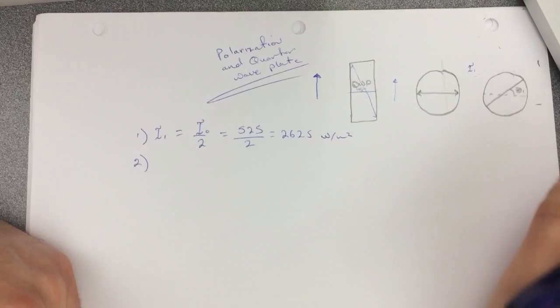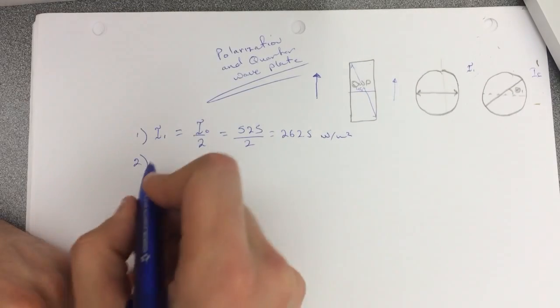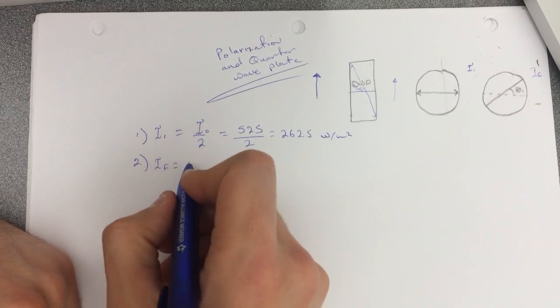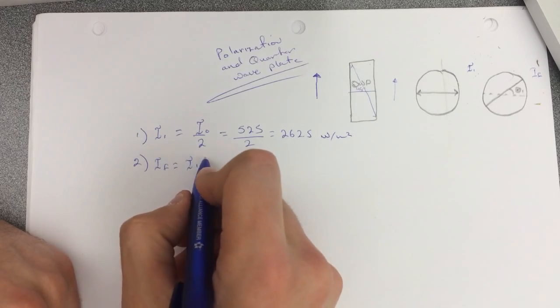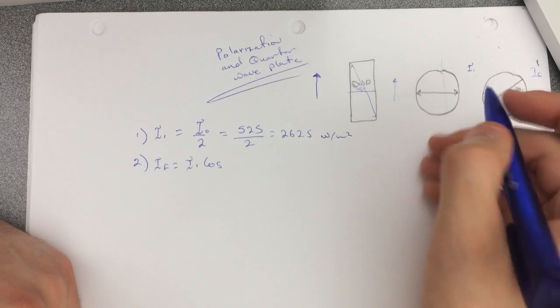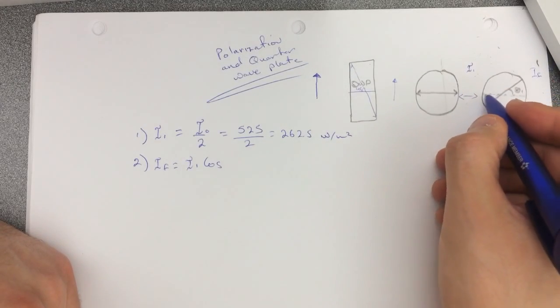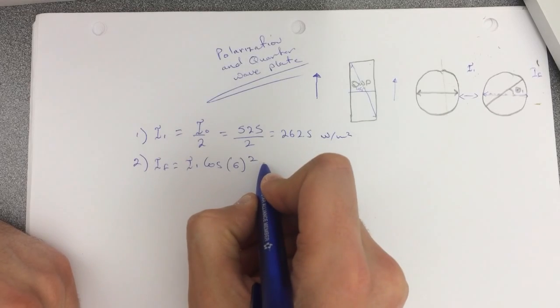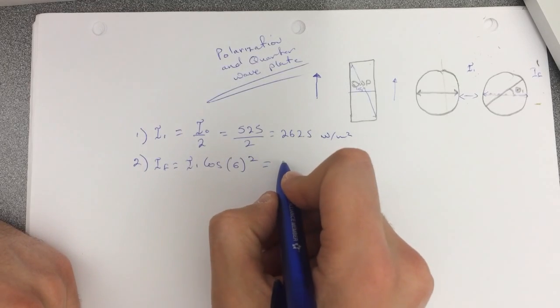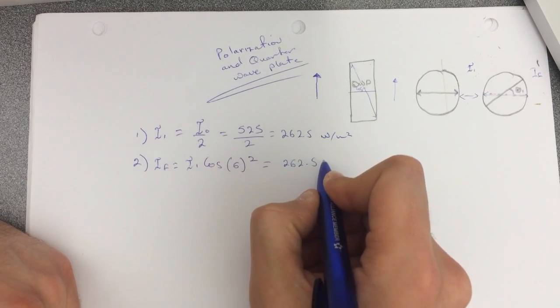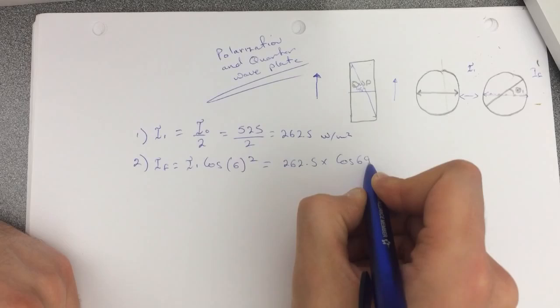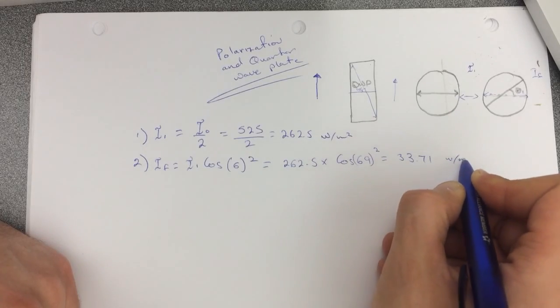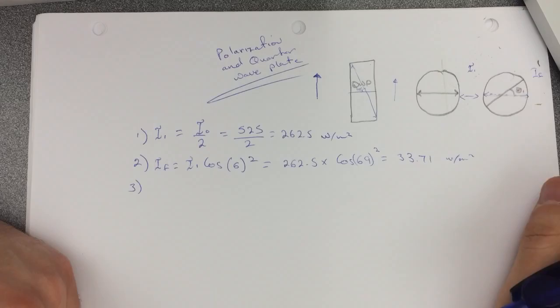All right, so question number two is asking what is I final. So I final will be here. I final will be which is the I one, which is this value, I one times the cosine of this angle because the light now is coming like this so it makes an angle theta here. Cosine of the theta squared. So this will be equal to 262.5 times the cosine of 69 squared and this was equal to 33.71.